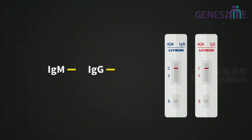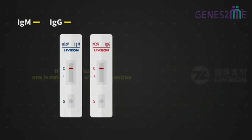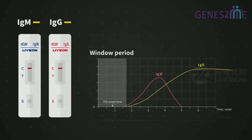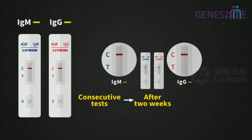When IgM and IgG are both negative, it may indicate that one is not infected with coronavirus. But it may also be an early infection case during the window period. The antibody should be tested consecutively. If both IgM and IgG remain negative after two weeks, the infection can be excluded.